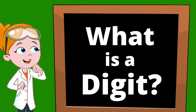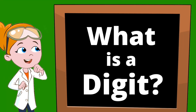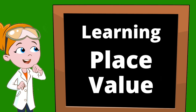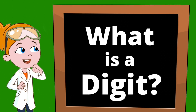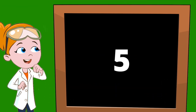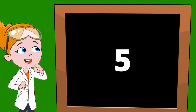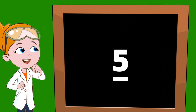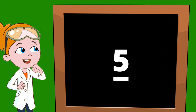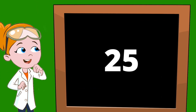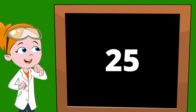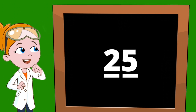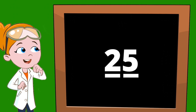Are you ready to learn what a digit is? We're also going to learn place value. Let's start with digits. Here's the number five — the number five has one number, so it has one digit. The number 25 is a larger number; it has two numbers, which means it has two digits. Let's go even bigger.